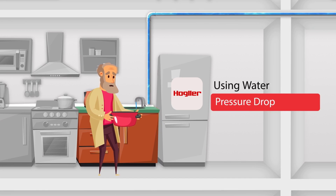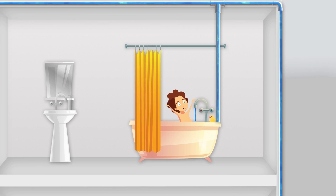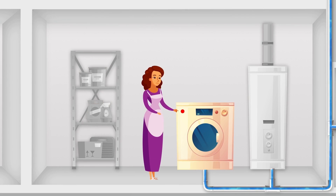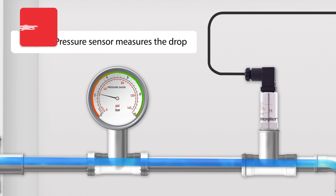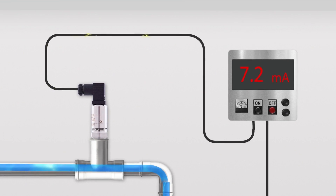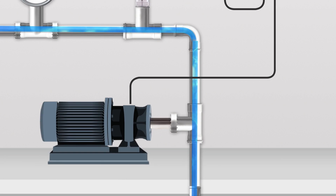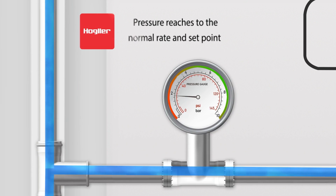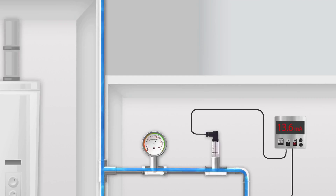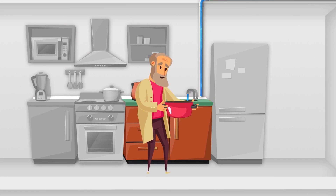When users start using water, the system's pressure drops. The pressure sensor measures this drop and transfers it to the inverter through an analog signal. The inverter then increases the system's pressure by controlling the engine propulsion, bringing it back to the normal rate and set point.